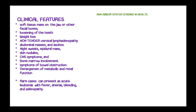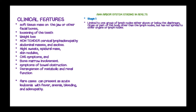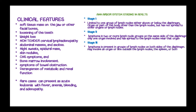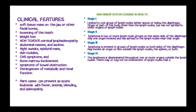In adults, staging follows the Ann Arbor staging system. Stage 1: the tumor is limited to one group of lymph nodes above or below the diaphragm, or one organ/part of the body without spread to other organs or lymph nodes. Stage 2: lymphoma is in two or more lymph nodes on the same side of the diaphragm; only one organ is involved and has spread to nearby lymph nodes. Stage 3: lymphoma is present in lymph node groups on both sides of the diaphragm and may involve an organ outside the lymph nodes such as the spleen. Stage 4: lymphoma is disseminated throughout one or more organs outside the lymph nodes, with possible involvement of distant lymph nodes.